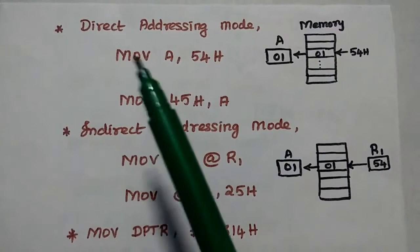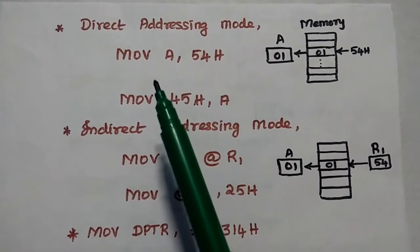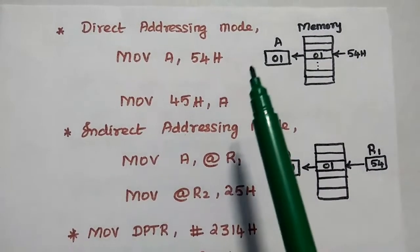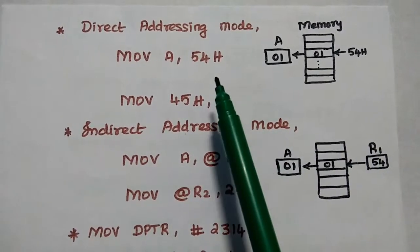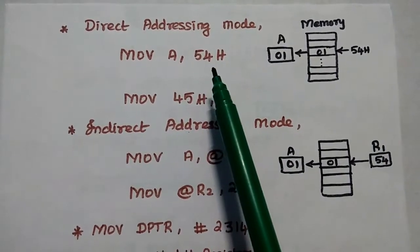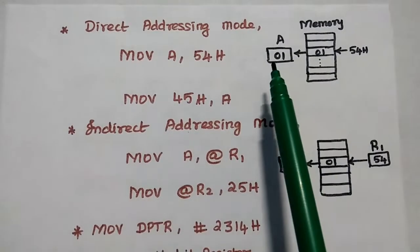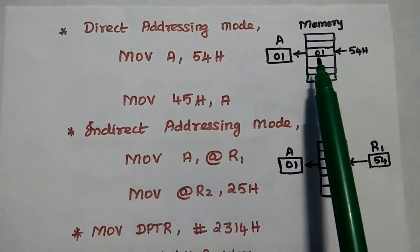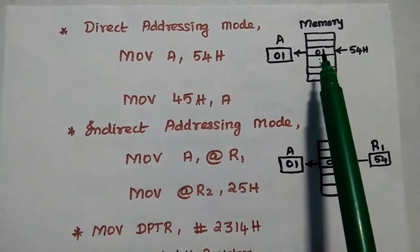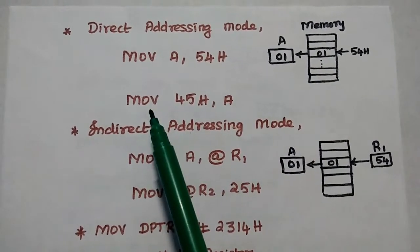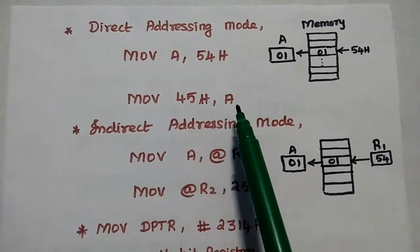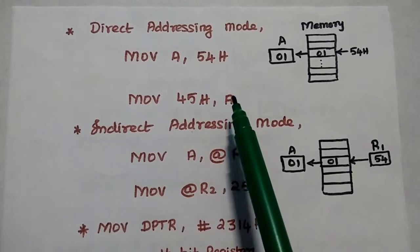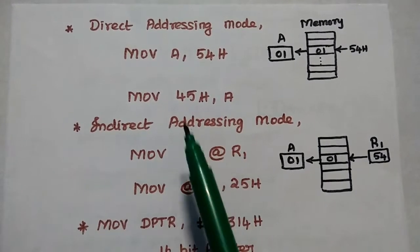For direct addressing mode, we can consider the example MOV A, 54H. That means we are going to transfer the content which is stored in memory address 54 into this accumulator. At this memory location, 01 is the value, and that value is transferred to this accumulator. Similarly, MOV 45H, A transfers the content of this accumulator into that memory location.